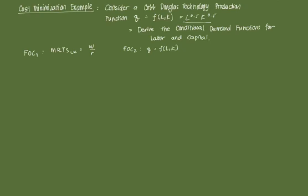So to derive those conditional demand functions we're going to apply that using the production function we have. Using FOC1, we get MRTS LK that's just equal to MPL over MPK. So we can compute for that easily.